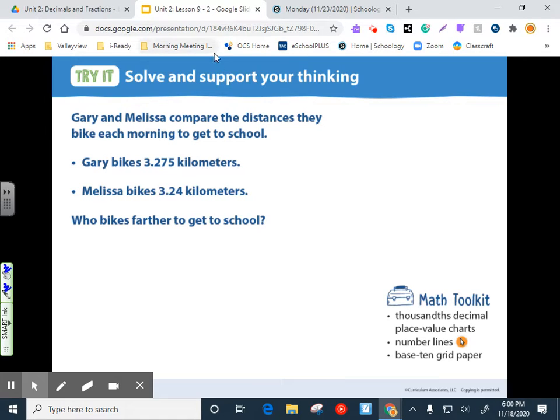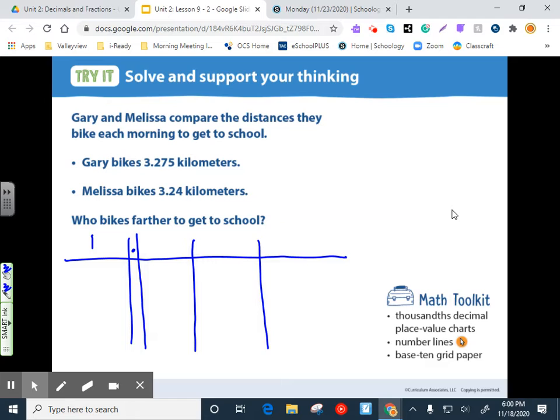Okay. So, again, to do this, we are going to use place value chart. And looking at those numbers, I can tell I need something for the ones column, a decimals column, the tenths, the hundredths, and the thousandths. So I'm going to put G for Gary. Gary bikes 3 and 275 thousandths. And then Melissa bikes 3 and 24 hundredths.